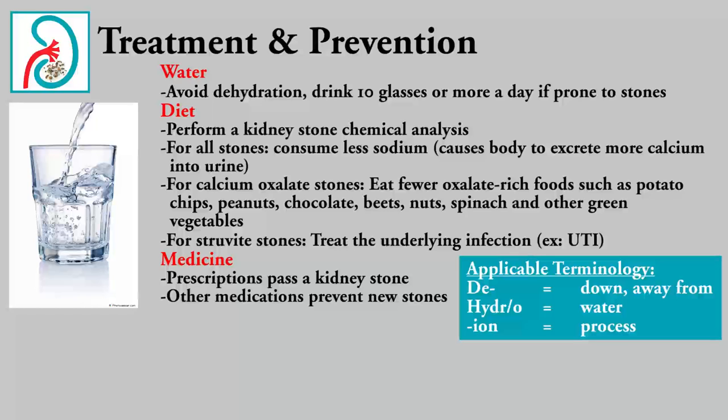For those who have had a kidney stone, a doctor may want to perform a kidney stone chemical analysis to determine what the stone is made of and then avoid those items. For all stones, the doctor will suggest consuming less sodium. For calcium oxalate stones, the doctor will suggest eating fewer oxalate-rich foods such as potato chips, chocolate, and green vegetables. For struvite stones, the doctor will treat the underlying infection, such as a urinary tract infection.